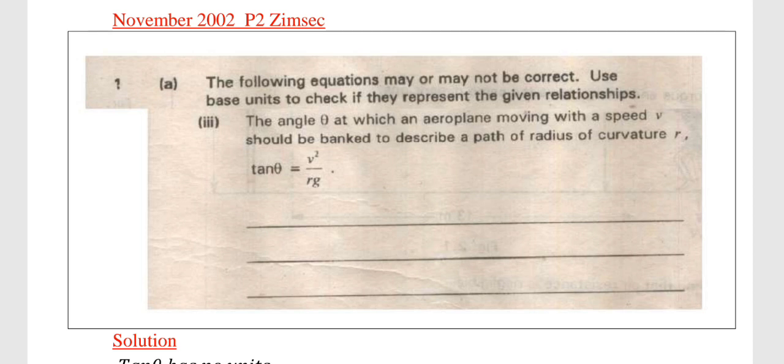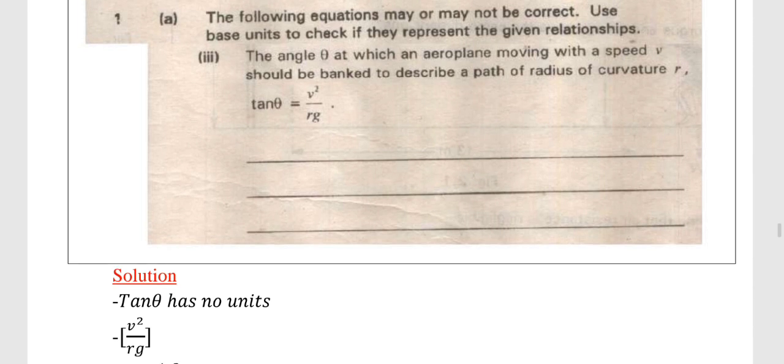Our relationship is tan θ = v²/rg, and we need to check if that equation is correct. So we first go to the left hand side and evaluate the units. Then we go to the right hand side and evaluate those units. If the units on the left hand side and the units on the right hand side are the same, it means the equation is homogeneous, hence the relationship is correct.